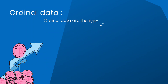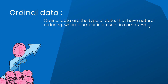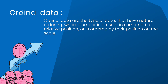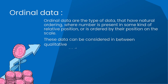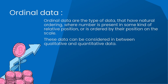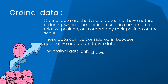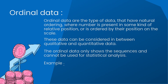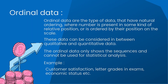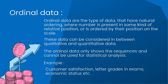Ordinal data is the type of data that has a natural ordering, where items are placed in some kind of relative position or ordered by position on a scale. These data can be considered in between qualitative and quantitative data. Ordinal data only shows sequences and cannot be used for statistical analysis. Examples include customer satisfaction, letter grades in exams, and economic status such as high, medium, and low.